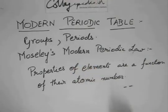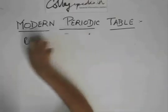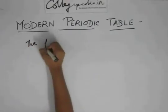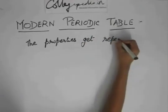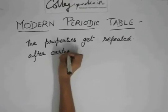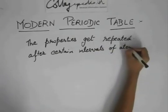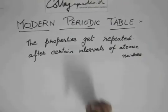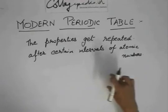Basically, the properties depend on the atomic number. And how do these depend? The properties get repeated after certain intervals of atomic numbers. So what this means is that the properties of the elements, after a certain atomic number has been reached, like after every n elements, the properties will get repeated.